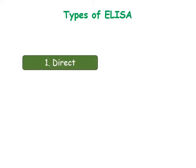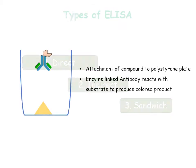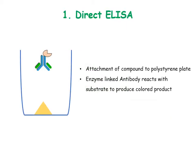The three most common types of ELISA are direct ELISA, indirect ELISA, and sandwich ELISA. In direct ELISA, the compound is attached to the polystyrene plate. Enzyme-linked antibody is added which binds to the compound, and a wash is given to remove unbound antibody. Now substrate is added, which is converted by the enzyme-linked antibody to produce a colored product, measured by colorimeter.